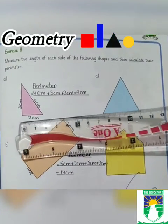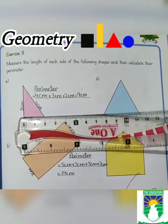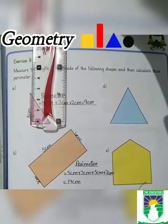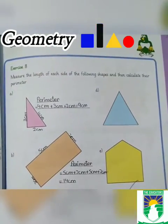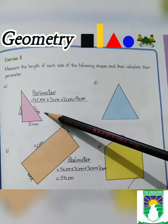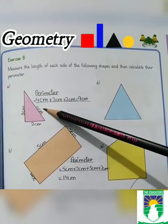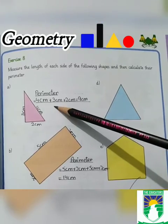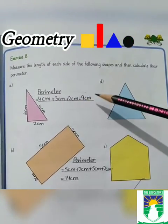We measure each side with a scale. This side is 4 centimeters, this side is 3 centimeters, and this side is 2 centimeters. The perimeter is 4 centimeters plus 3 centimeters plus 2 centimeters, which equals 9 centimeters.